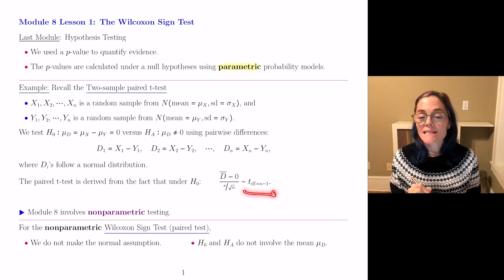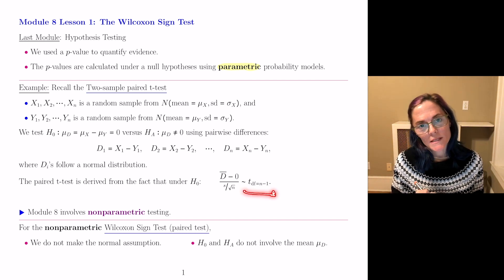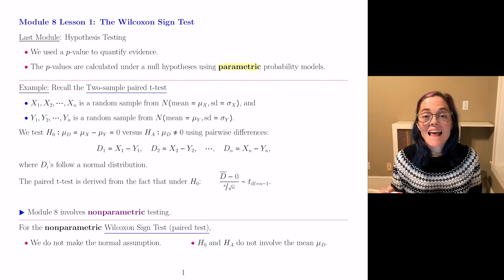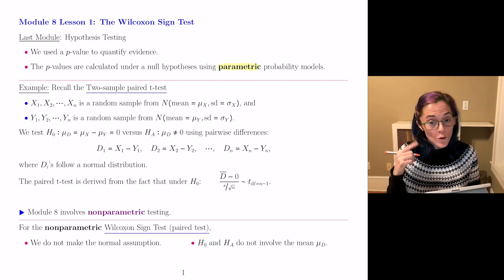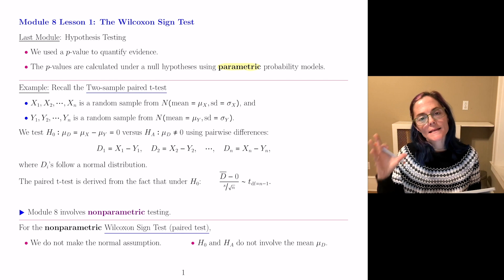is distributed as a t-distribution with n minus 1 degrees of freedom. This was a parametric test, really due to this normality assumption.